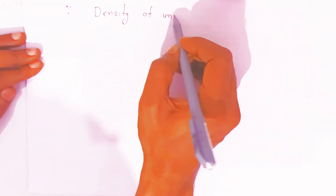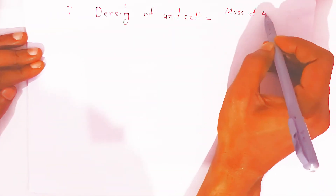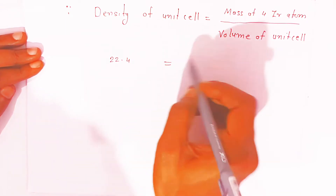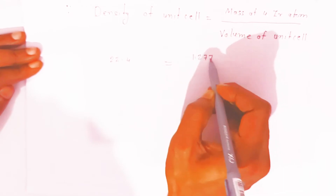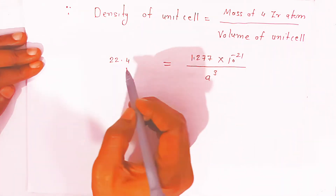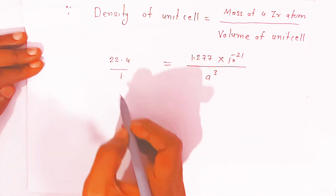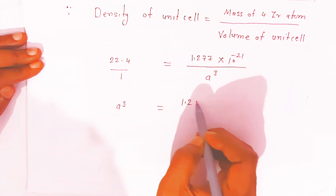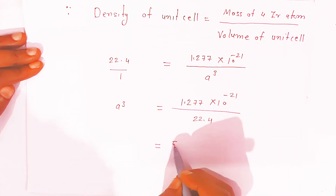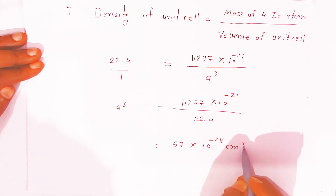Now you know the mass of 4 iridium atoms and the density. Density = mass of 4 iridium atoms / volume of unit cell. So 22.4 = 1.277 × 10⁻²¹ / a³. Therefore a³ = 1.277 × 10⁻²¹ / 22.4, which gives 57 × 10⁻²⁴ cm³. This is a³.